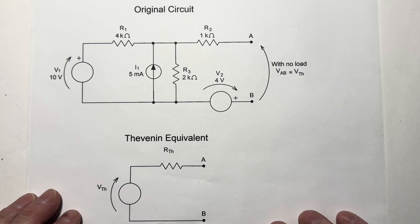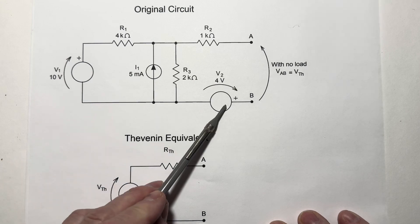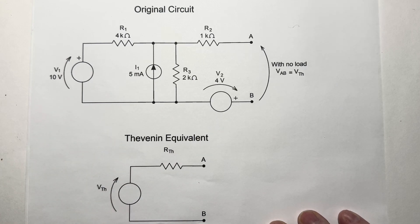Here is the circuit of interest for our analysis today. It contains two voltage sources and a current source. We're going to determine the values of VTH and RTH for the Thevenin equivalent. We're going to start by determining the Thevenin resistance.